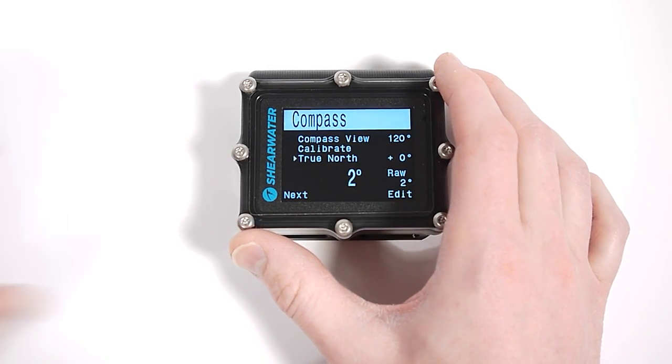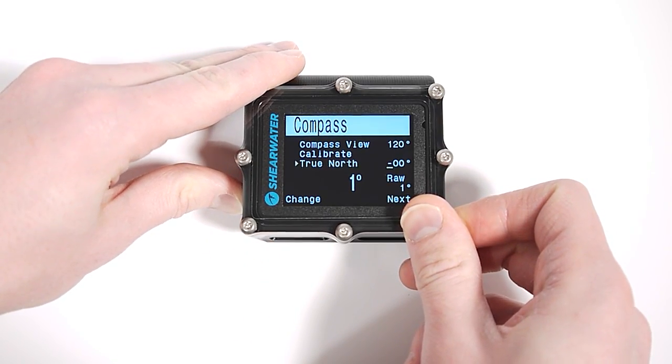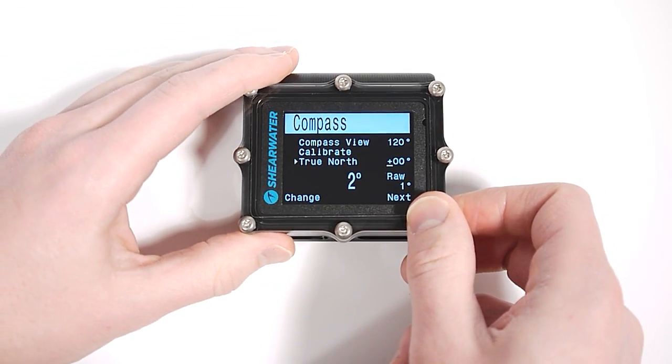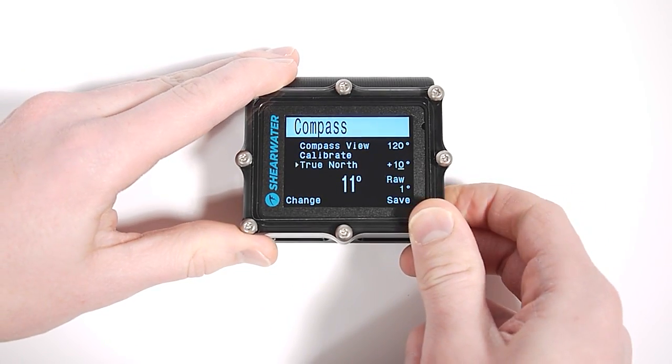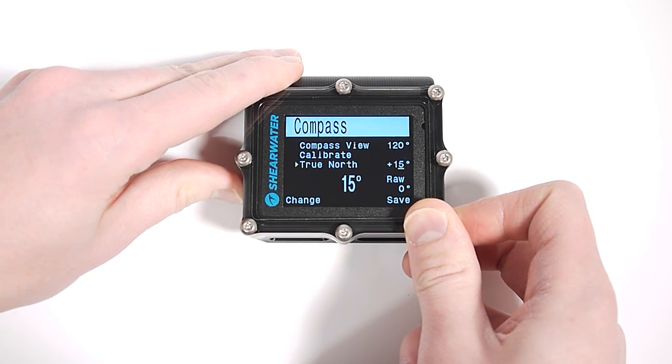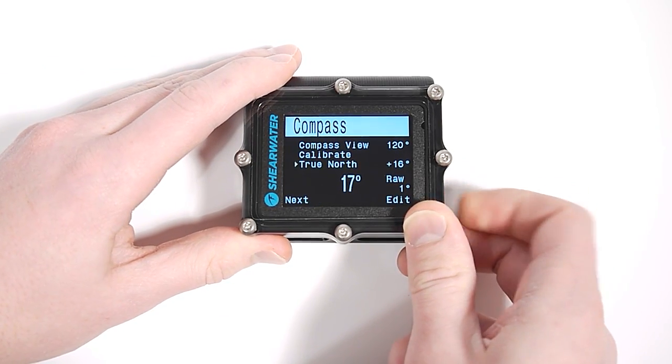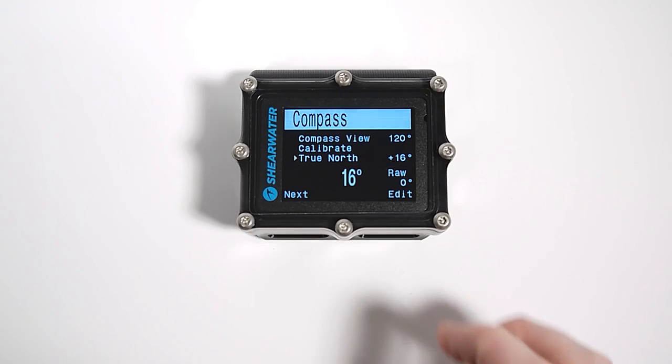The true north compensation is something a little bit different. This is called declination, or magnetic variation, or true north I've called it for simplicity. And you'll look this up on a map. And the magnetic declination in Vancouver BC, where we are, is plus 16 degrees. You can set this from minus 99 degrees to plus 99 degrees. And you'll look that up on a map.